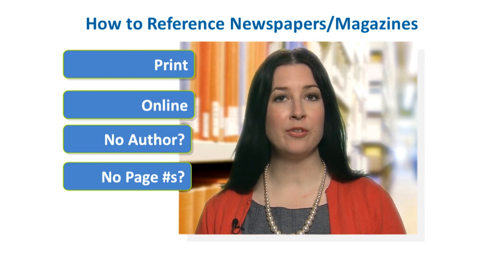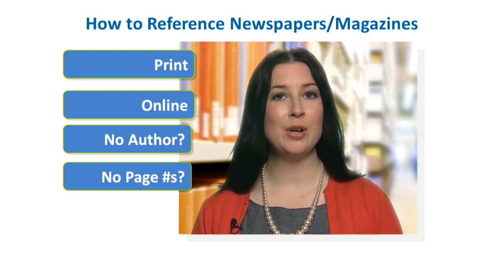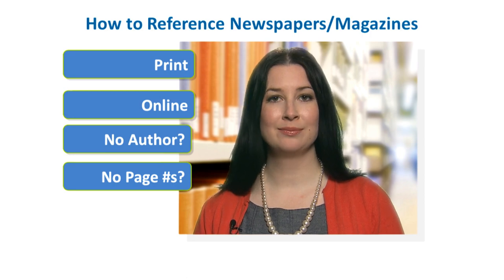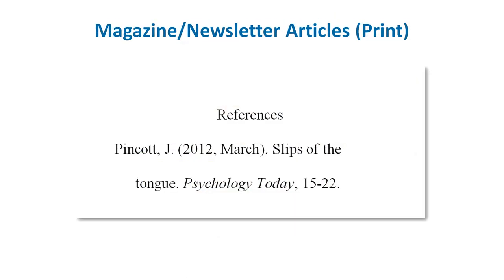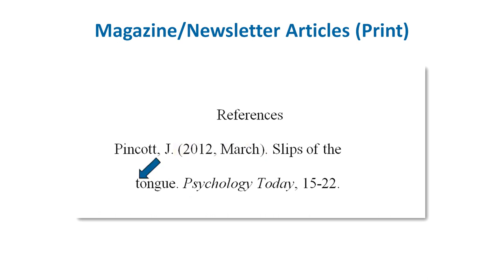Let's get started with how to reference a print magazine or newsletter article without volume or issue numbers. Normally, in parentheses, you only include the year of publication. But if there's no volume or issue number, also include the month, or the season, or the day it was published. Remember, in APA Style, the first letter of every word of an article title is not capitalized, but the first letter of every major word in a magazine's title is capitalized. The magazine title is also in italics.